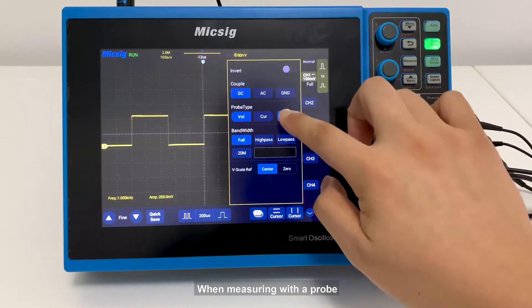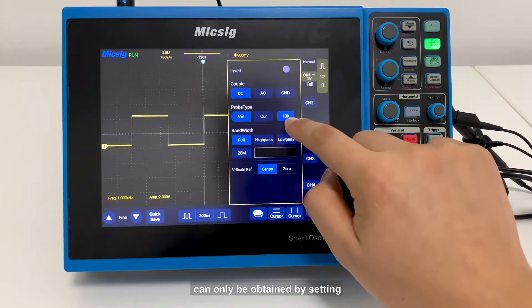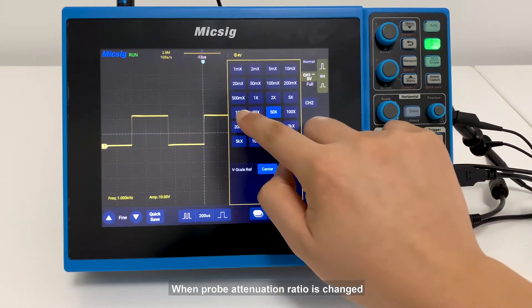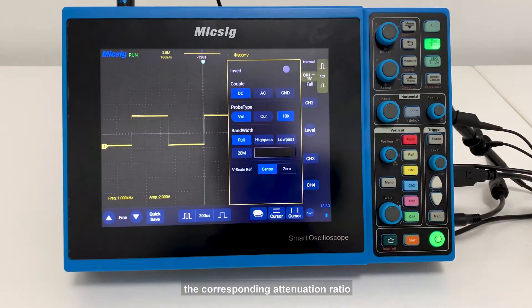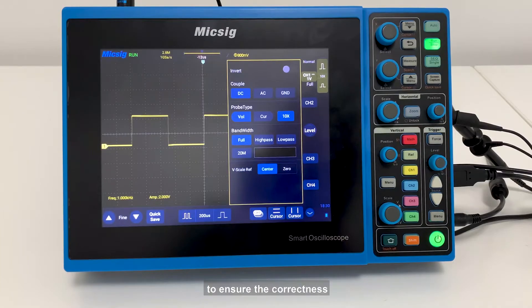When measuring with a probe, the correct measurement result can only be obtained by setting the correct probe attenuation ratio. When probe attenuation ratio is changed, the corresponding attenuation ratio must be set on the channel menu to ensure the correctness of the waveform amplitude and measurement result displayed by the oscilloscope.